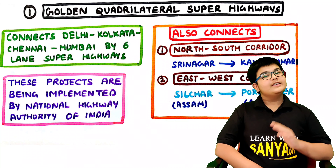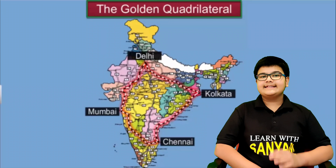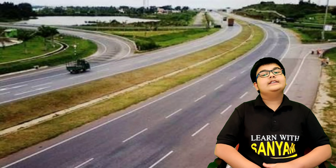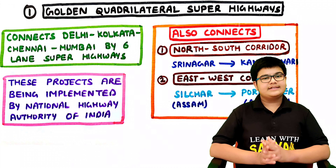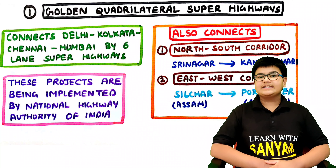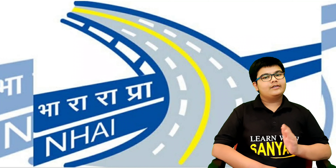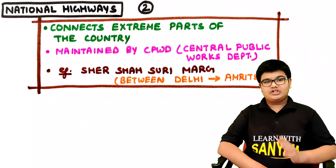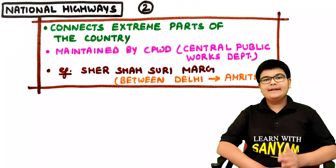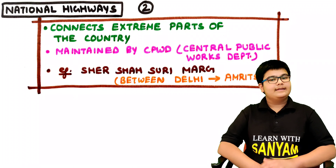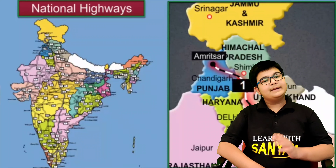First, the Golden Quadrilateral Super Highways. It connects Delhi, Kolkata, Chennai and Mumbai by six-lane super highways. It also connects the north-south corridor from Srinagar to Kanyakumari, and the east-west corridor from Silchar in Assam to Porbandar in Gujarat. These super highway projects are being implemented by the NHAI, i.e. the National Highway Authority of India. Second, national highways connect extreme parts of the country. They are maintained by the CPWD, i.e. the Central Public Works Department. An example is the Sher Shah Suri Marg between Delhi and Amritsar.